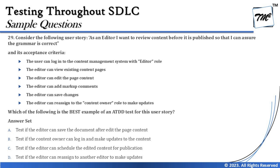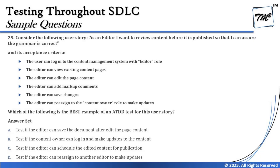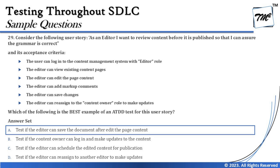Option D says: test if the editor can reassign to another editor to make updates — this is incorrect because the acceptance criteria state the editor can reassign to the content owner, not to another editor. Looking at all options, B, C, and D are not supported by the acceptance criteria, while A directly maps to the criterion about saving changes. Therefore, the right answer is A: test if the editor can save the document after editing the page content.